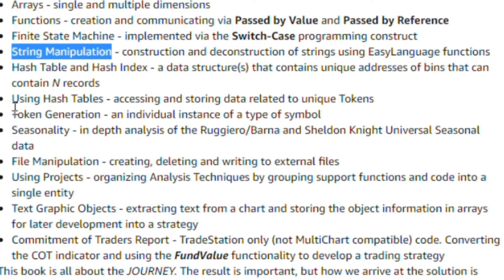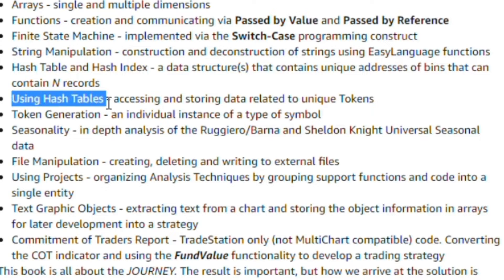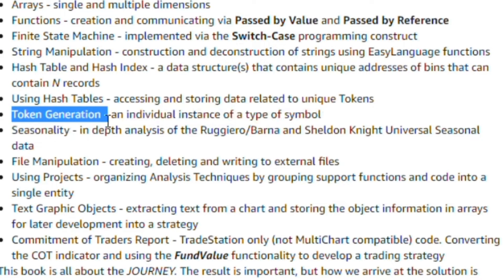I introduced the concept of a hash table — a data structure that uses a function to find the address in a 2D array or table so you can extract information from it. It's a cool way to store a lot of information in an easily accessible format. I talk about token generation: a token would be an address for the hash table, and how you create the token via a function.